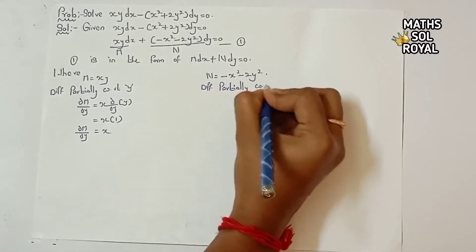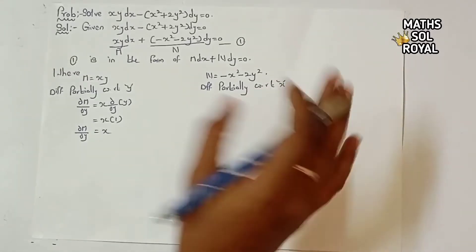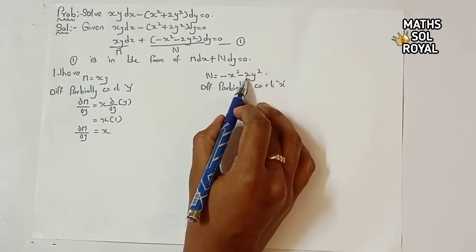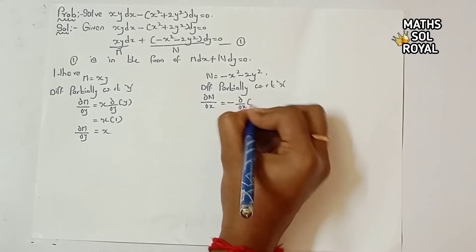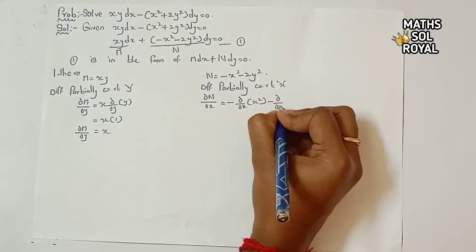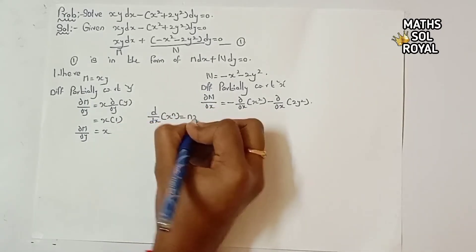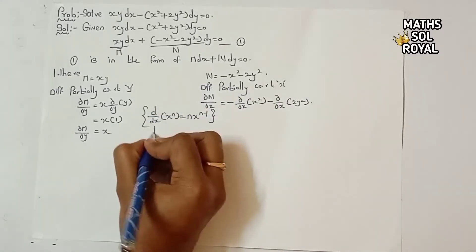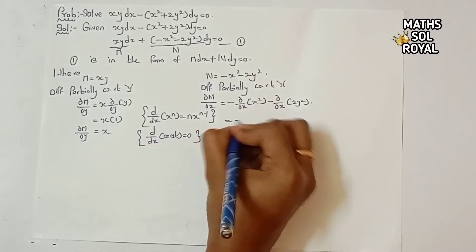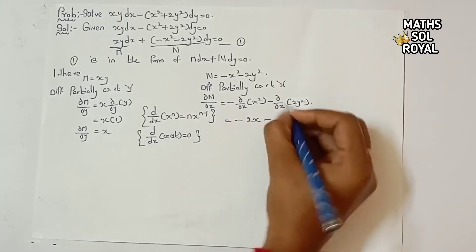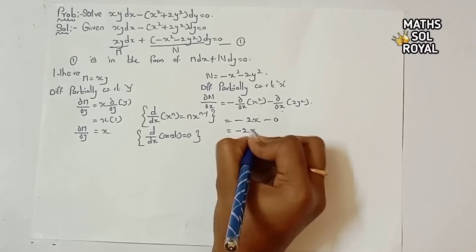Now differentiating N partially with respect to x — only x terms are differentiated and y terms are treated as constant. So ∂N/∂x equals minus (∂/∂x)(x²) minus (∂/∂x)(2y²). Using the formula d/dx(xⁿ) = n·xⁿ⁻¹ and d/dx(constant) = 0, we get: minus 2x minus 0 = minus 2x. This is ∂N/∂x.